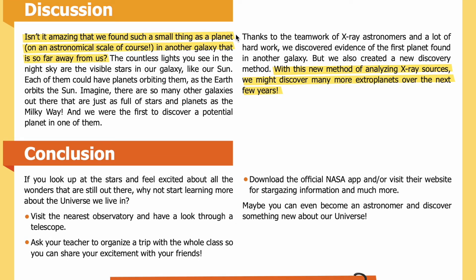Discussion: Isn't it amazing that we found such a small thing as a planet — on an astronomical scale — in another galaxy so far away from us? The countless lights you see in the night sky are visible stars in our galaxy, each of which could have planets orbiting them. Imagine how many other galaxies are just as full of stars and planets as the Milky Way — and we were the first to discover a potential planet in one of them. Thanks to the teamwork of X-ray astronomers, we discovered evidence of the first planet found in another galaxy, and also created a new discovery method. With this new method of analyzing X-ray sources, we might discover many more extroplanets over the next few years.